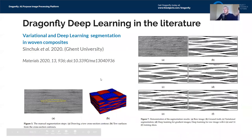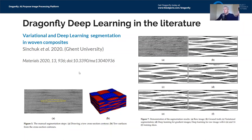Here's another paper from Ghent University, published in 2020 in Materials — I just learned about it recently. They combine deep learning with another method called variational segmentation to look at woven composites. I don't want to oversell the deep learning component since they're combining two approaches, but you can see how Dragonfly's deep learning engine fits into their workflow.